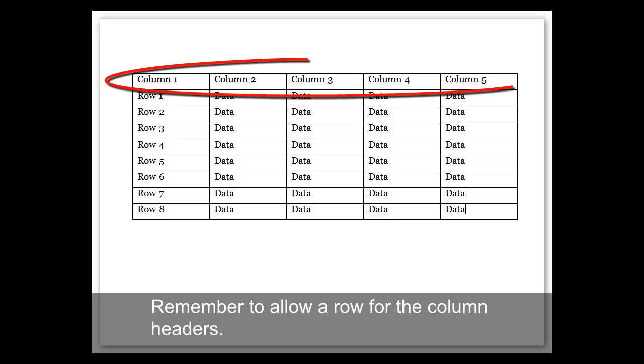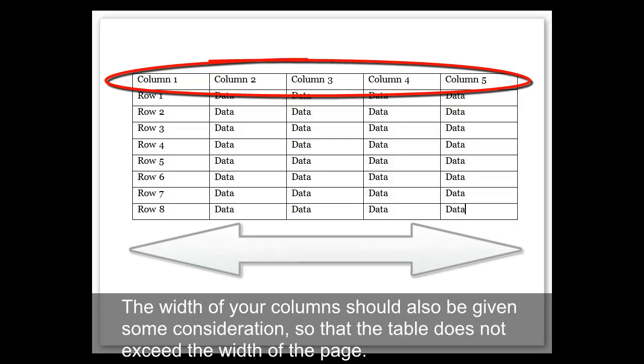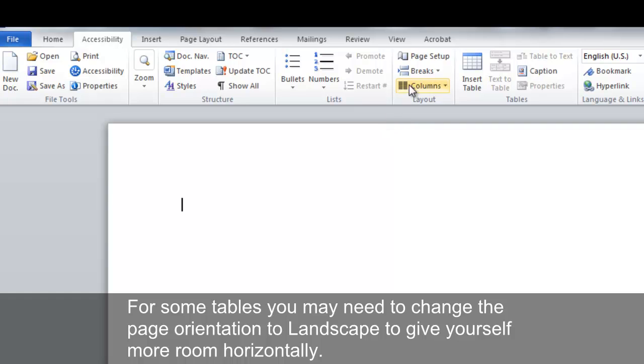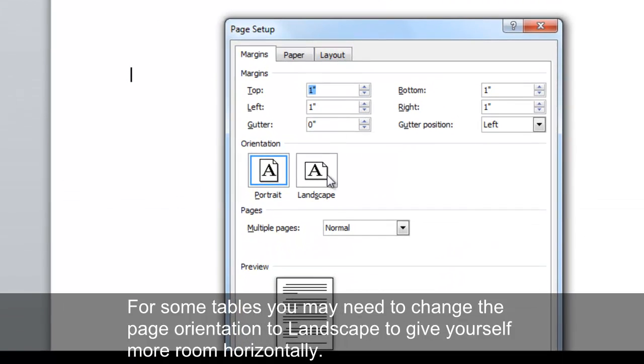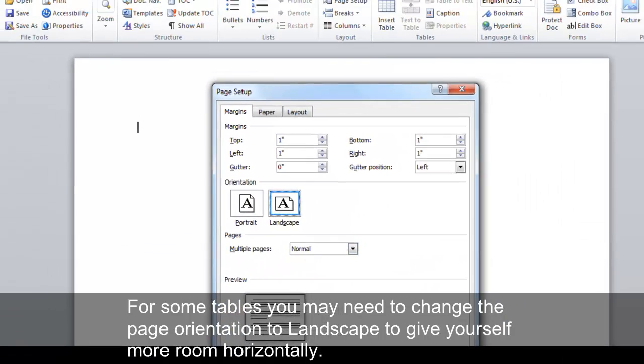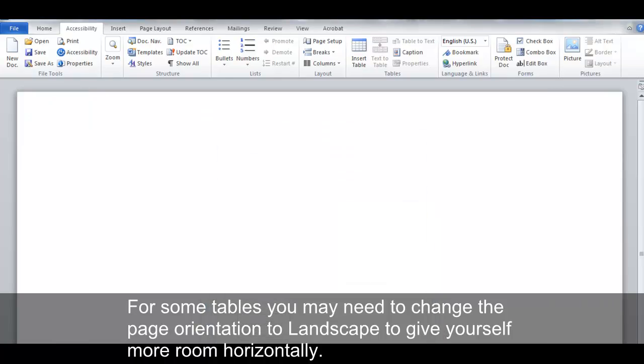Remember to allow a row for the column headers. The width of your columns should also be given some consideration, so that the table does not exceed the width of the page. For some tables, you may need to change the page orientation to landscape to give yourself more room horizontally.